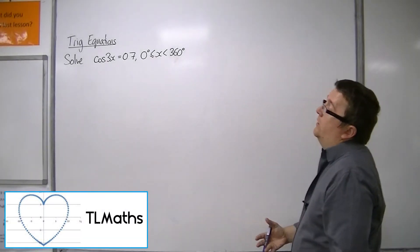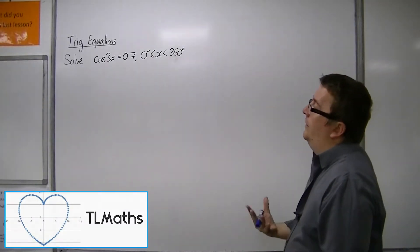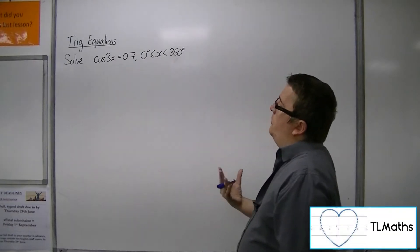Okay, so in this video we're going to solve cos of 3x equals 0.7 between 0 and 360 degrees.